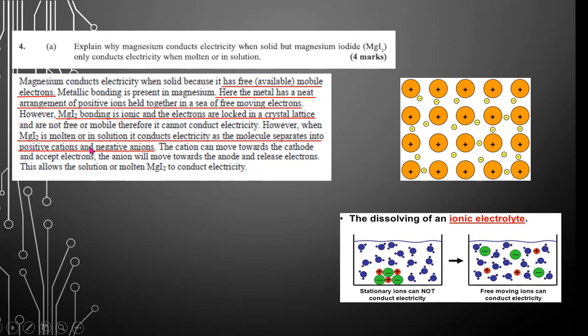So, the cations will move towards the cathode. So these red cations move towards the cathode, and the anions move towards the anode. And they will release electrons. This will allow the solution or molten magnesium iodide to conduct electricity.